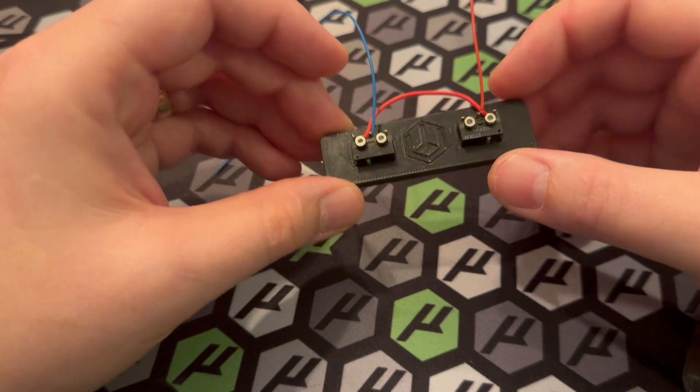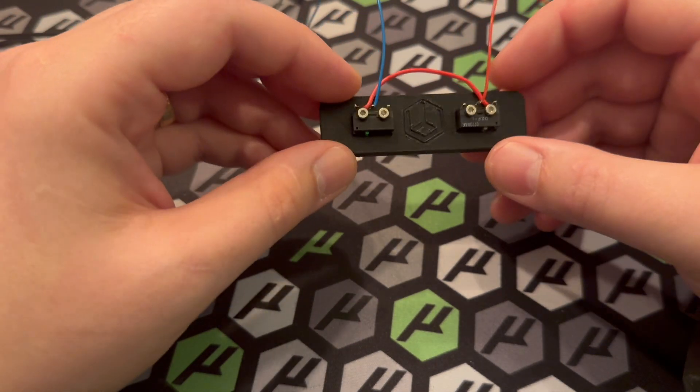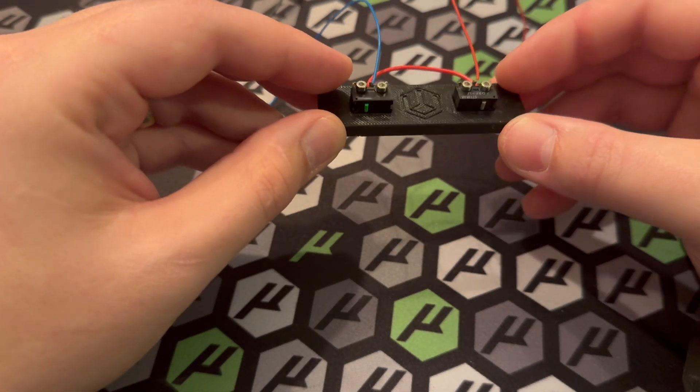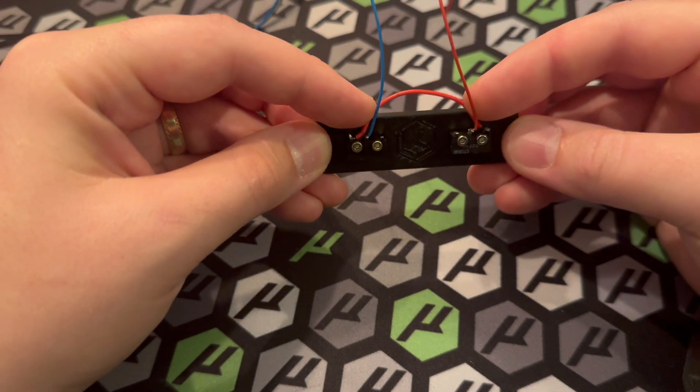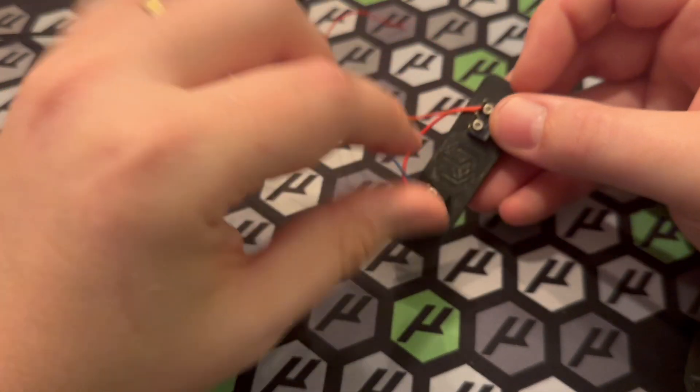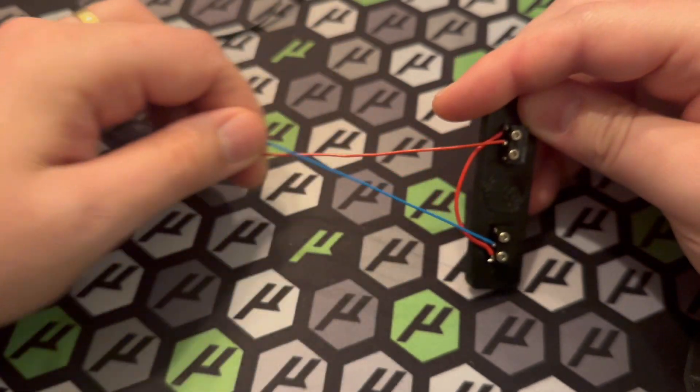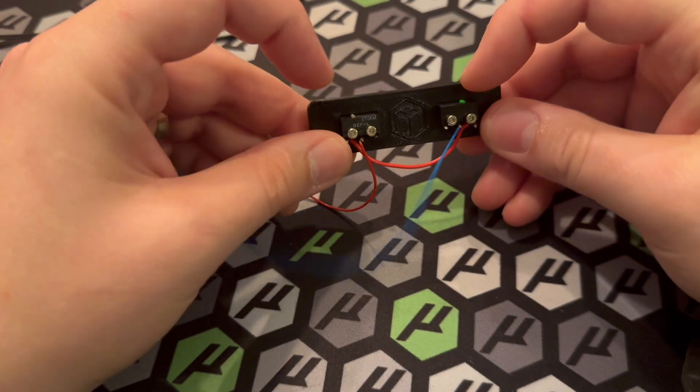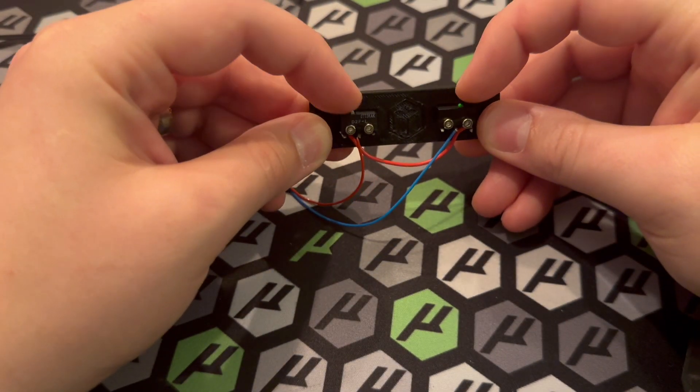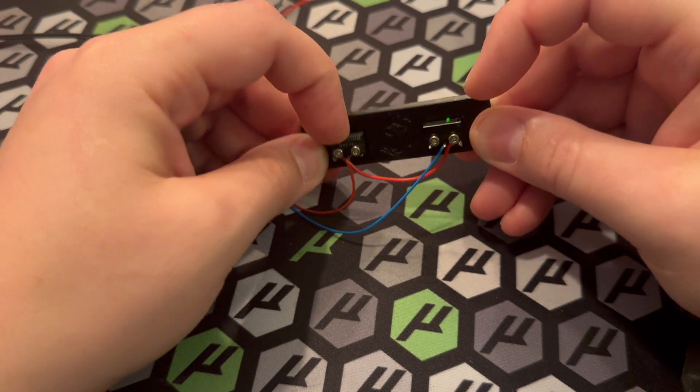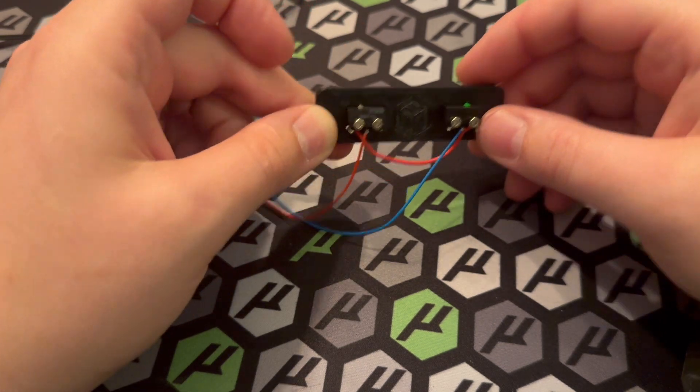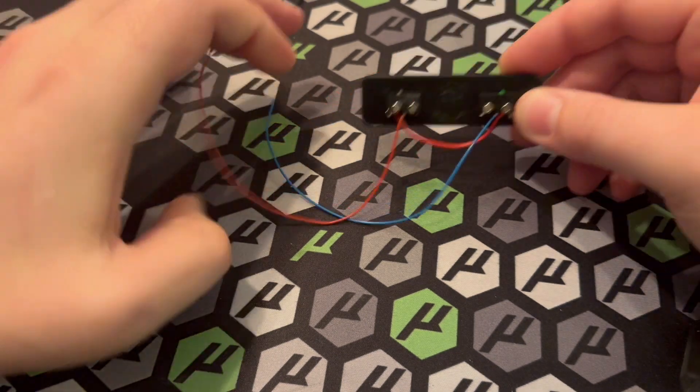Something that's really unique about this system is the filament sensor situation. What I have here is two micro switches. I've got the common pins tied together and the two normally open pins just run back to the MCU. What that allows us to do is have a load and a runout sensor on one MCU pin.